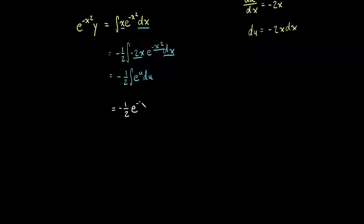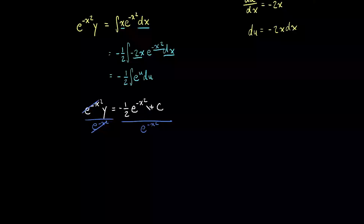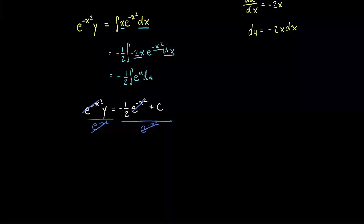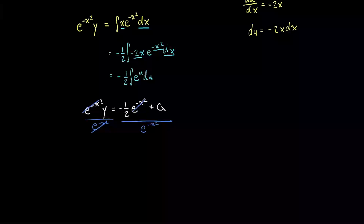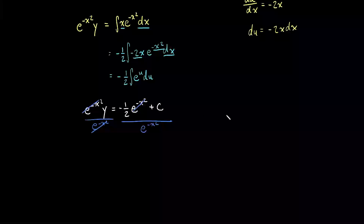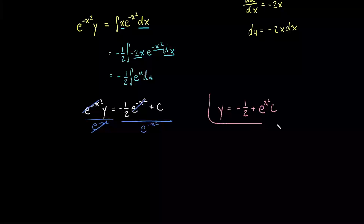So we have e^(-x²) · y = -1/2 · e^(-x²) + C. If you wanted to solve specifically for y, divide both sides by e^(-x²). The e^(-x²) terms on the left cancel, and on the right the -1/2 · e^(-x²) divided by e^(-x²) gives -1/2, while C divided by e^(-x²) gives C · e^(x²). Our final solution is y = -1/2 + C · e^(x²), and that's how you solve a differential equation by the method of integrating factor.